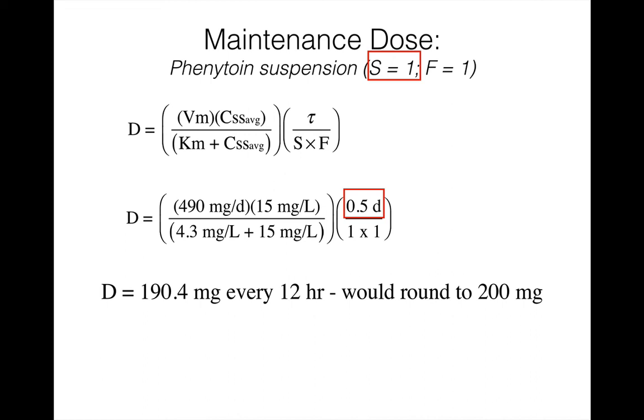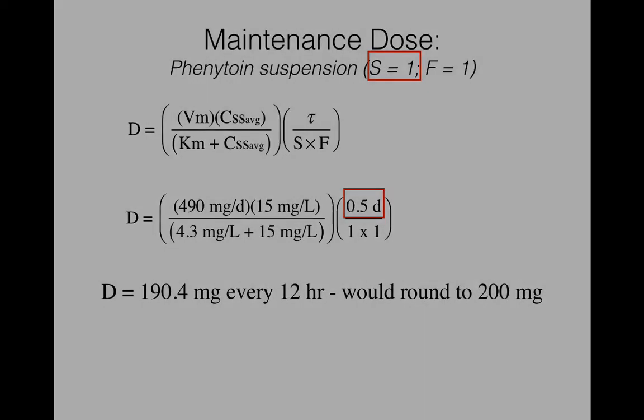As always, when we use a different dose than the one predicted to produce a desired concentration, we want to calculate the impact of that different dose on the predicted concentration. Here is where you will see the large impact on steady-state concentrations from very small changes in dose.